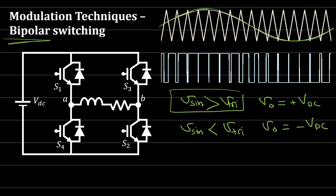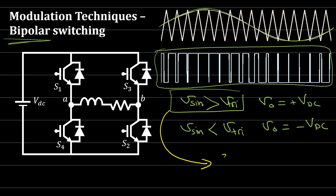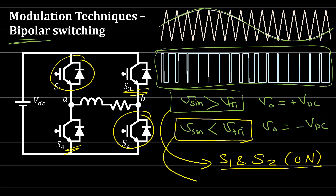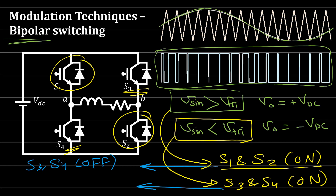When the sine wave is greater than the triangular wave, we get a signal to turn on switch one and switch four. When the sine wave is smaller than the triangular wave, we turn on switch three and switch two instead. When switch one and four are on, switch three and four must be off, and vice versa. This is bipolar switching — the output is either plus VDC or minus VDC.